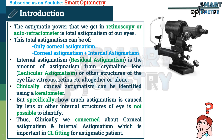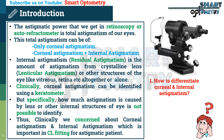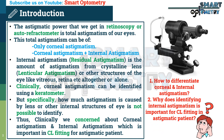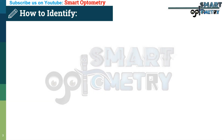Now two questions arise. How do we differentiate corneal astigmatism and internal astigmatism? And why is identifying internal astigmatism important for contact lens fitting in an astigmatic patient? Don't forget to attempt the quizzes at the end of the video. How to identify corneal and internal astigmatism?